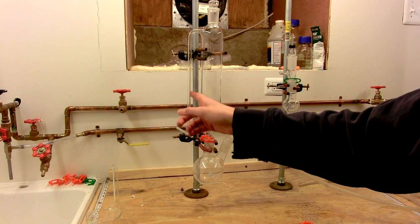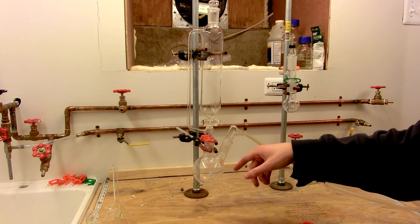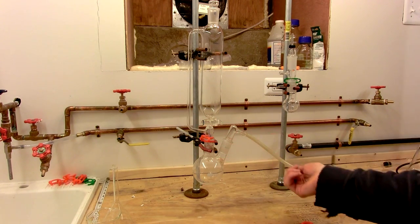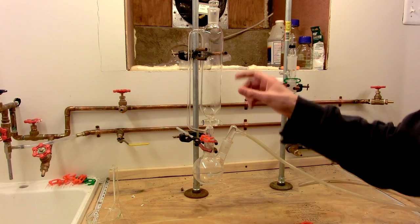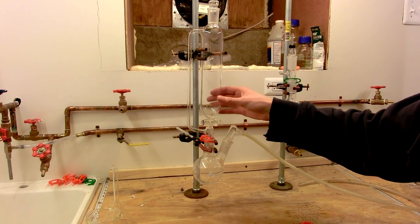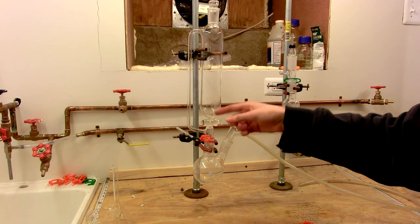It's important that you have a pressure equalizing addition funnel because the pressure generated by the chlorine gas being delivered to the experiment could exceed the pressure in the headspace above the hydrochloric acid in the addition funnel, which would cause bubbling up through the stopcock.